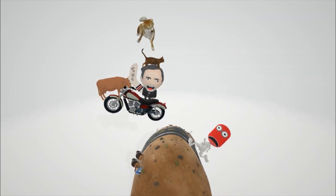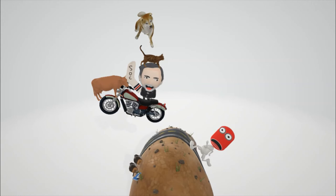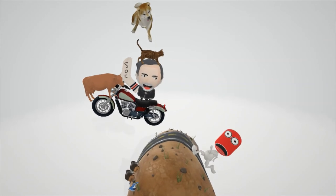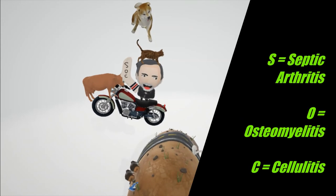Why is Louis Pasteur holding a sock over here? Not because the bacteria has anything to do with socks, but to help us remember the mnemonic SOC — the diseases associated with Pasteurella multocida. S for septic arthritis, which occurs if Pasteurella invades the joints. O for osteomyelitis if it infects the bones. And C for cellulitis, which commonly occurs 24 hours after infection.